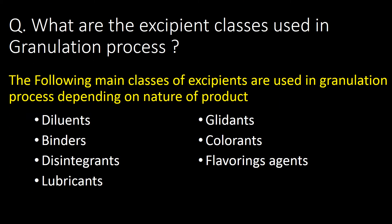What are the excipient classes used in the granulation process? The main classes of excipients used in the granulation process, depending on the nature of the product, are: diluents, binders, disintegrants, lubricants, glidants, colorants, and flavoring agents.